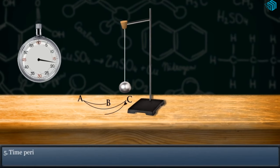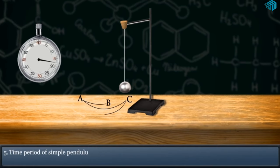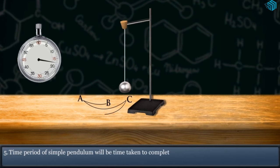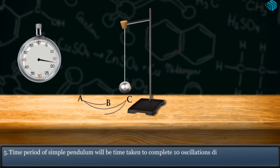Step 5: Time period of simple pendulum will be time taken to complete ten oscillations divided by number of oscillations.